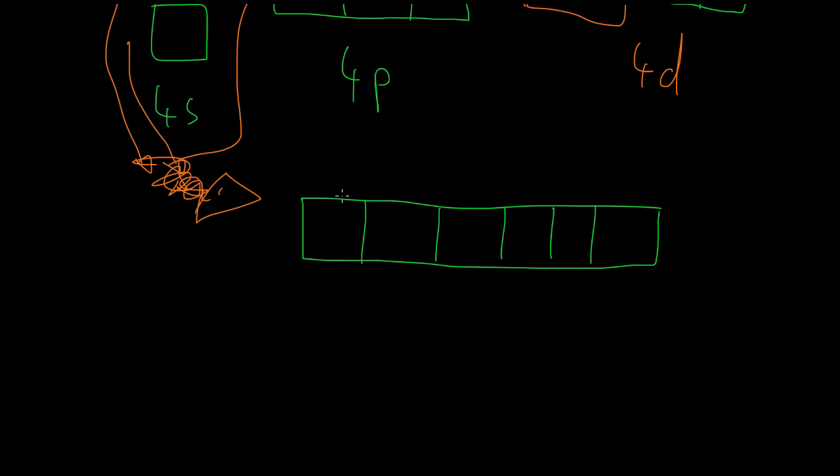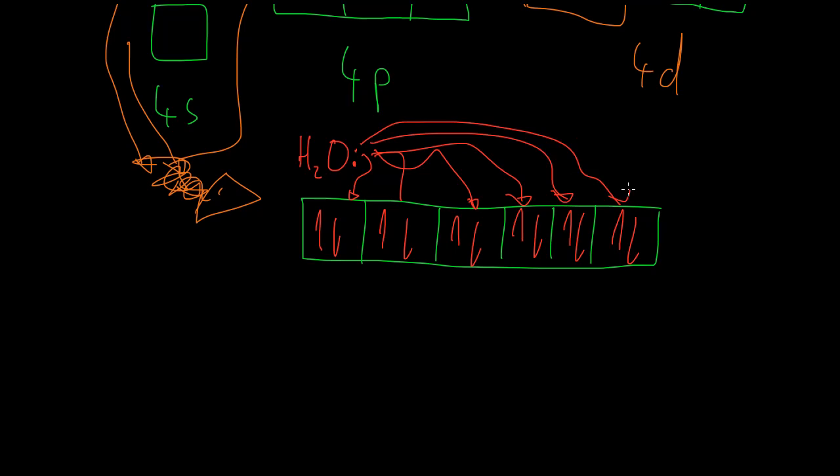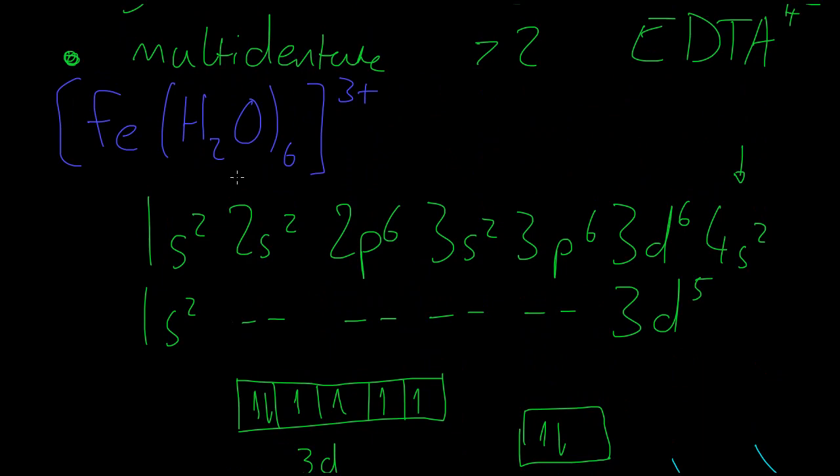And that is where, remember these can each be filled with two electrons and those two electrons all come from the lone pairs on H2O. So we fill these up, this up, this up and so on all with H2Os. And that is why it forms a complex with six H2O ligands. If we look back up at the formula for the complex, we have six H2O ligands.